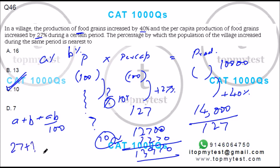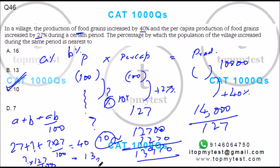So a change of 27 plus some question mark plus their product divided by 100 gives you a 40% change. Solving, you get approximately 13 here, which equals 1300/127, very close to 10. Since 1.27 × 10 = 12.7, which is very close to 13, approximately 10% rise is your best answer. That finishes the set.